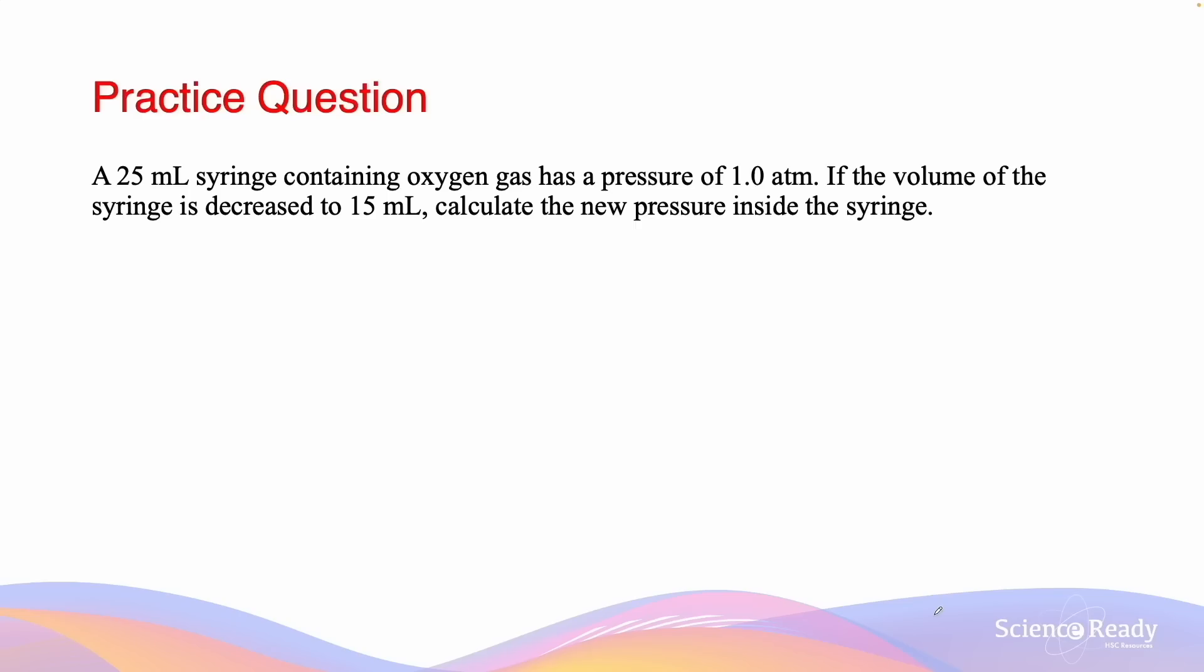Let's consider the following questions. A 25 mL syringe containing oxygen has a pressure of 1 atm. If the volume of the syringe is now decreased to 15 mL, calculate the new pressure inside the syringe.